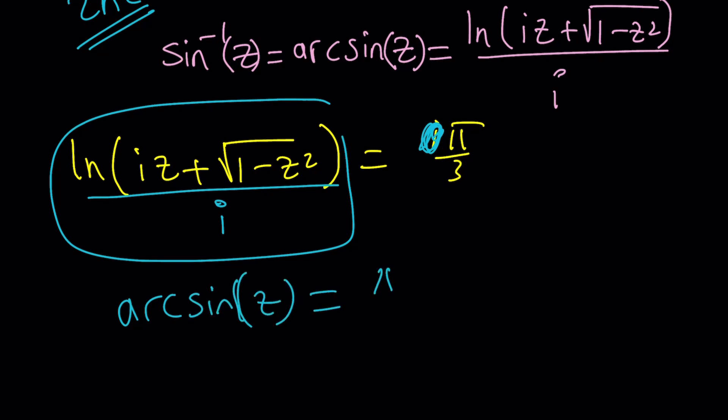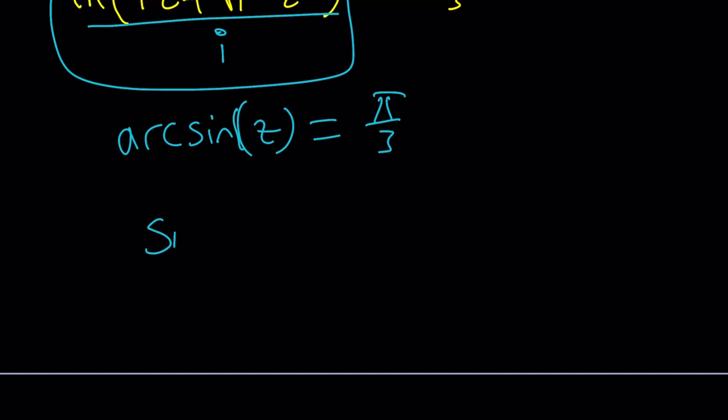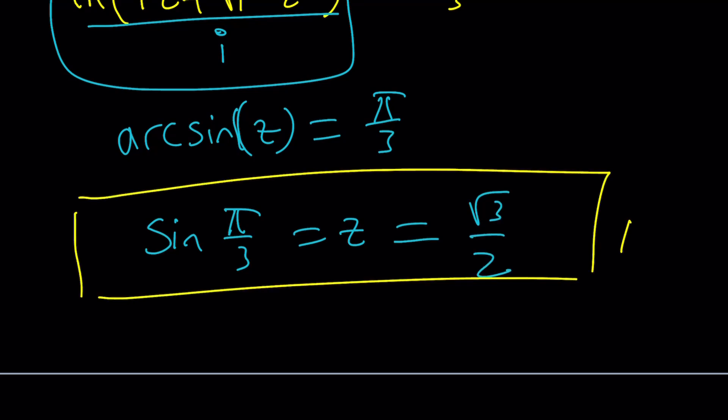And guess what this is equal to? This is equal to the arc sine of z. So if arc sine of z is π/3, this just means that sine π/3 is z. And as you know, sine π/3 is root 3 over 2 because it's the sine of 60 degrees or the cosine of 30 degrees.